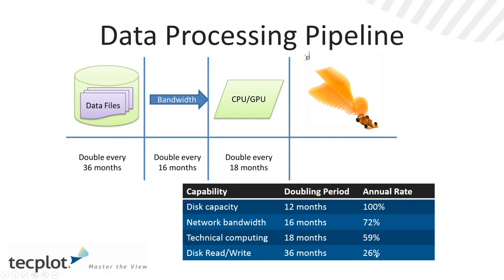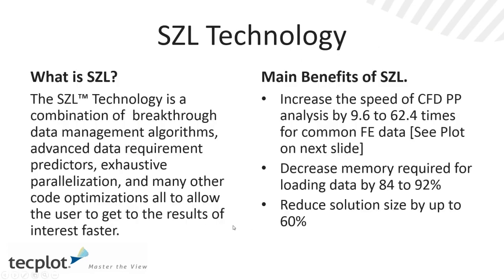We're finding that data read speeds are doubling about every 36 months, which is a 26% annual rate of speed improvement. Compared to disk capacity, which is going up every 12 months. There's been a lot of research into solid state drive technology — solid state drives work very well for certain applications, but for reading large continuous files they aren't much faster. I have a solid state drive on my workstation, and comparing it to an old-fashioned high-speed spindle drive, I'm not seeing huge improvements. Bandwidth — getting data from where the file resides to the CPU/GPU — is doubling roughly every 16 months. CPU/GPU performance is still following Moore's Law. So our focus has been primarily around loading off the disk.